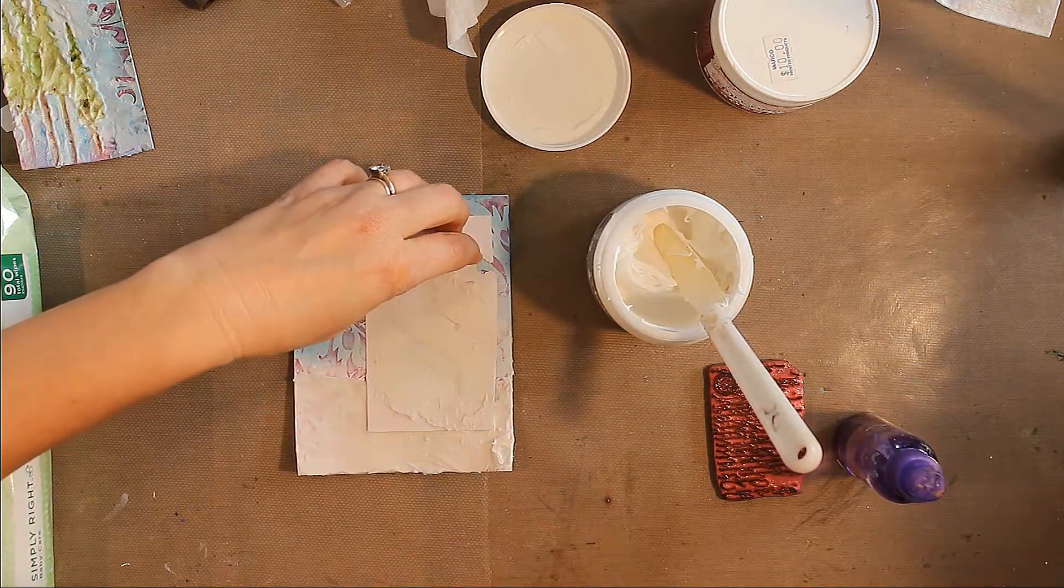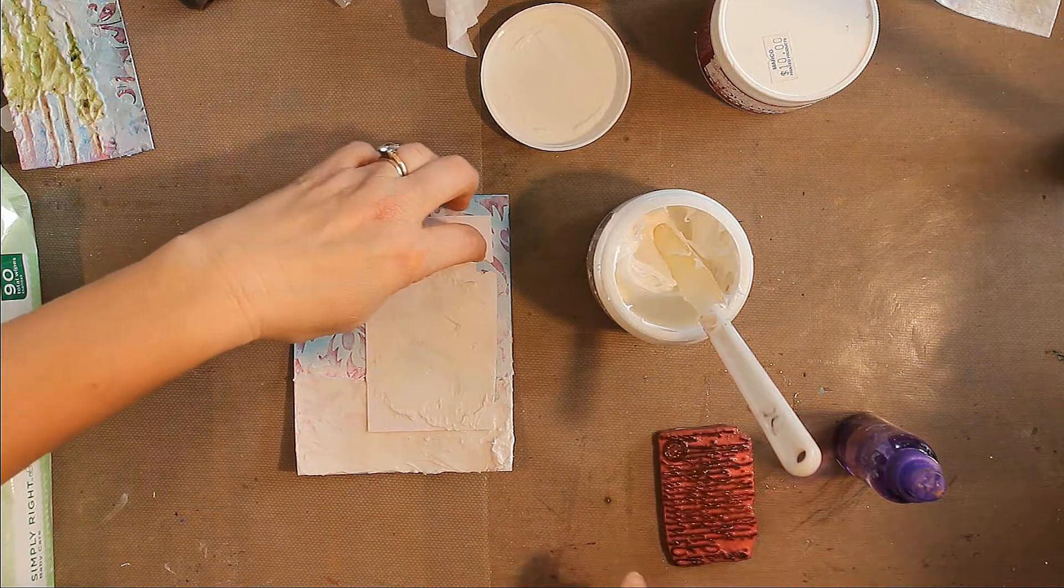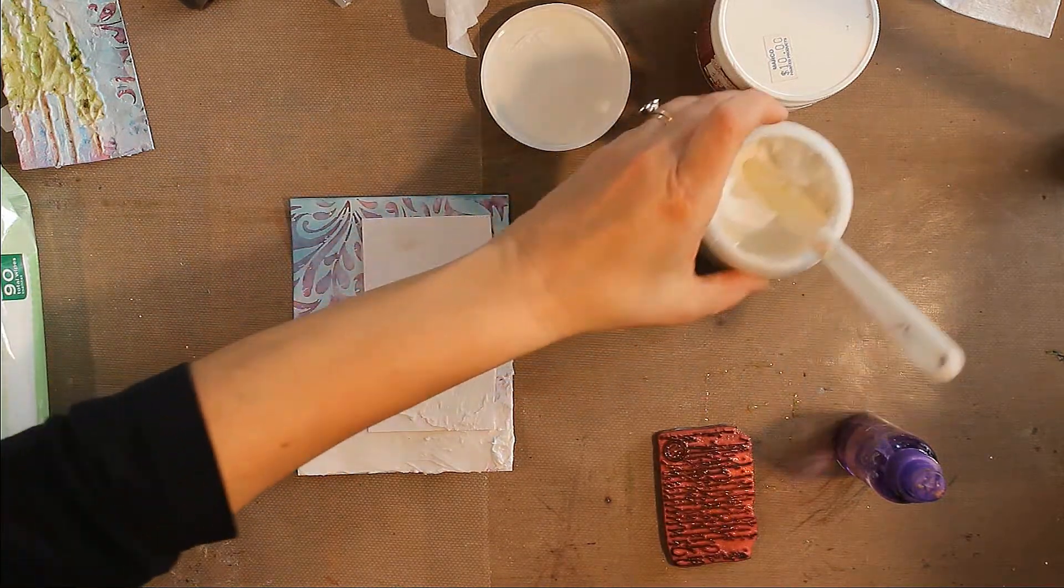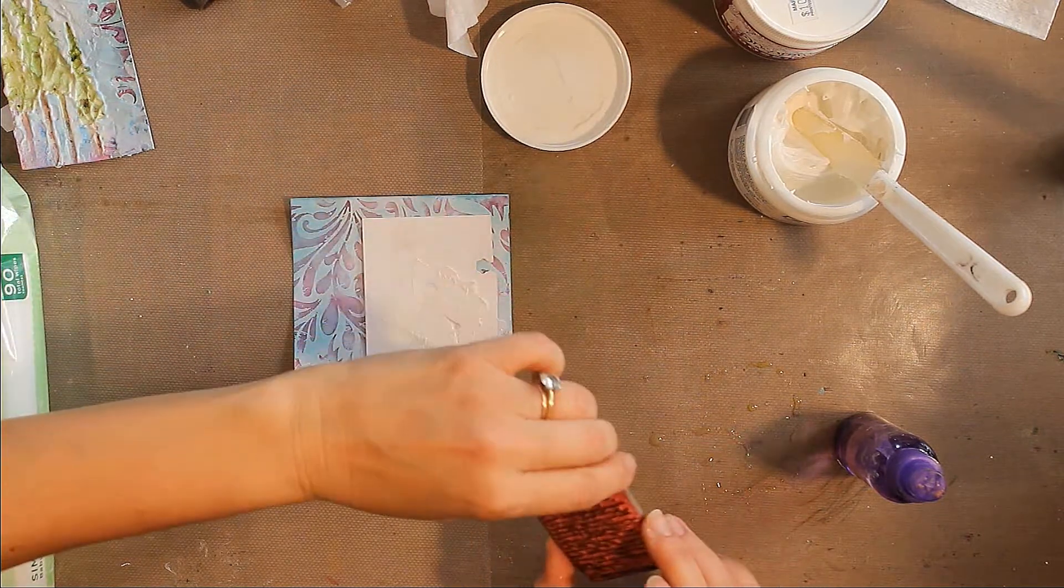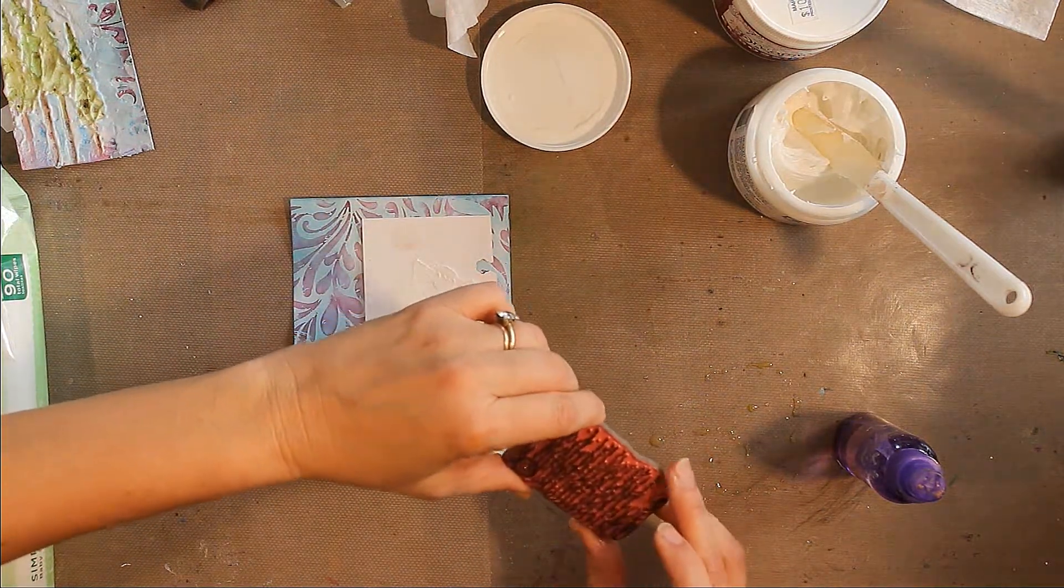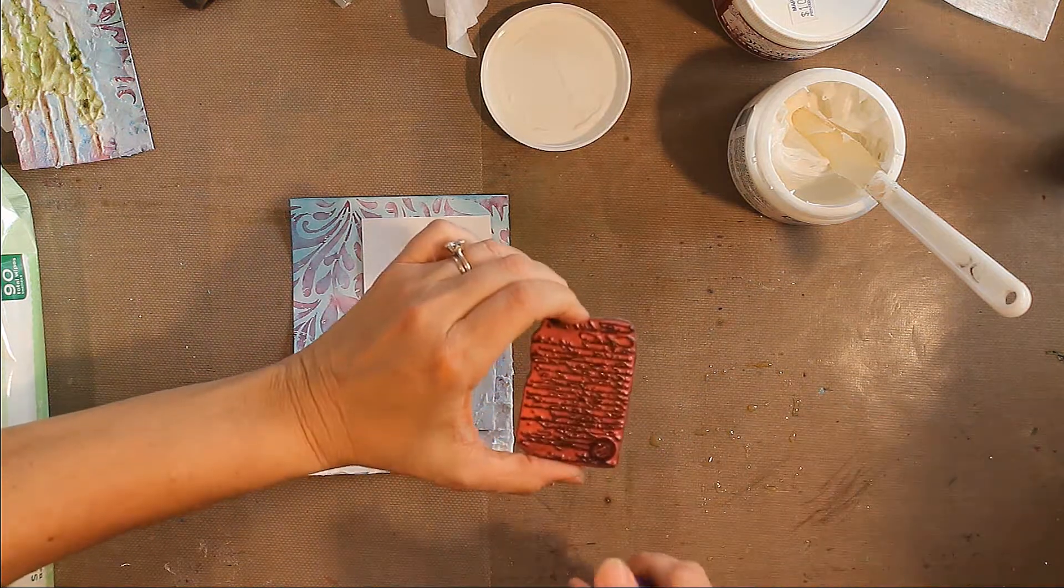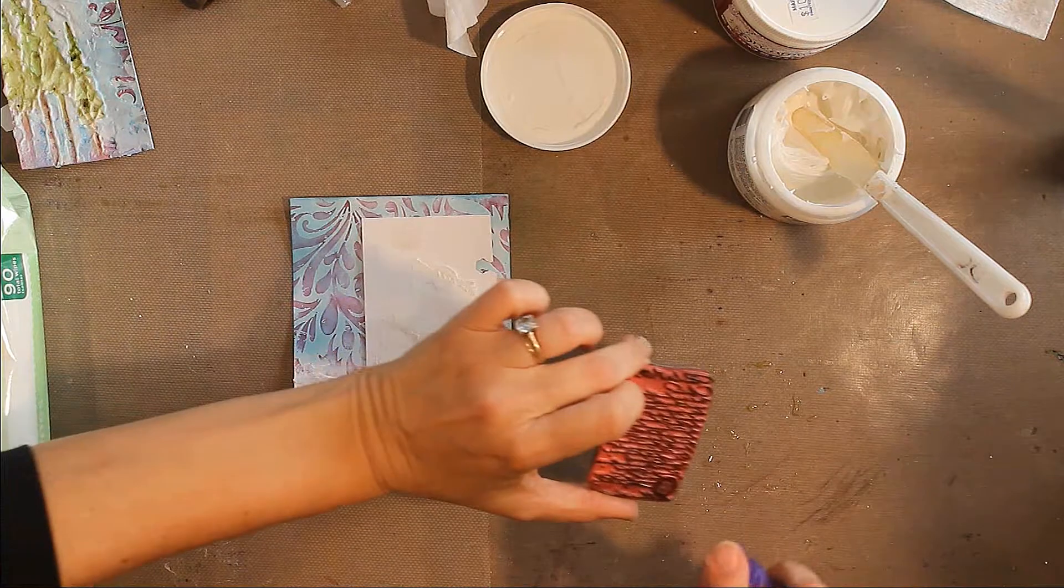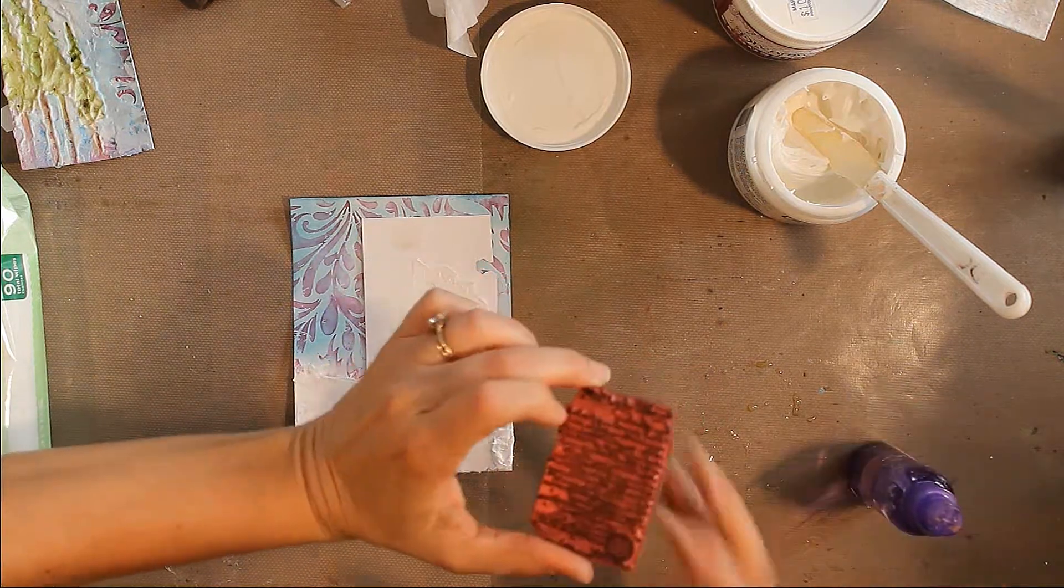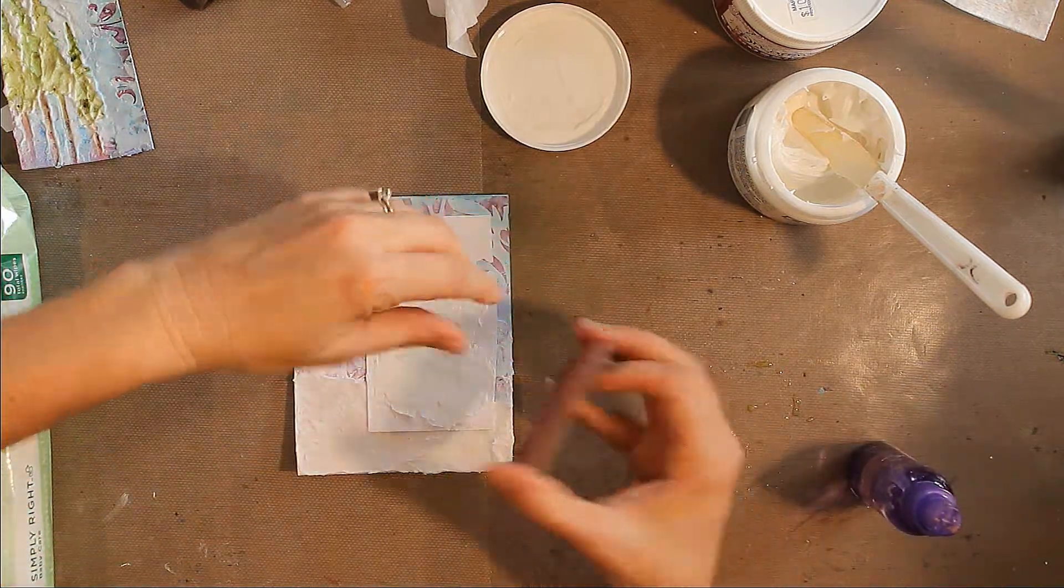So I've put my embossing paste into my tree. Now I'm going to stamp it just to give the tree some texture. Before you do that, you always need to spritz your stamp with some water. If your stamp isn't wet, it's going to stick. So we'll try this.